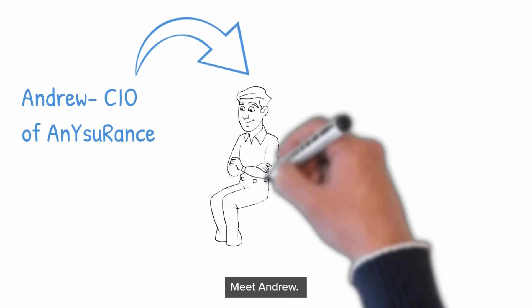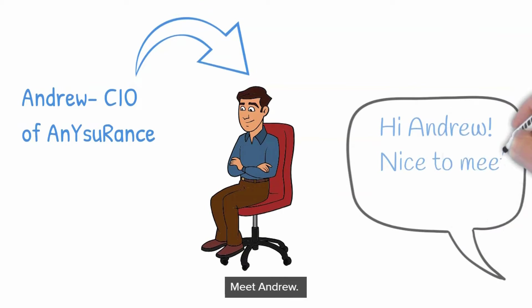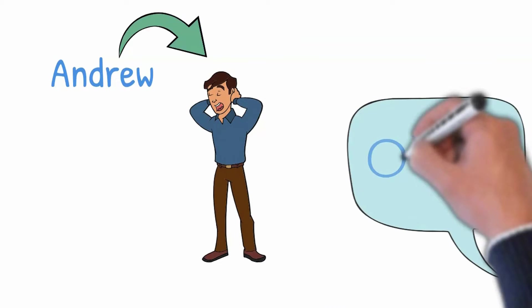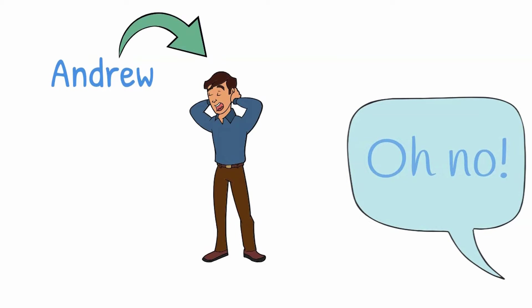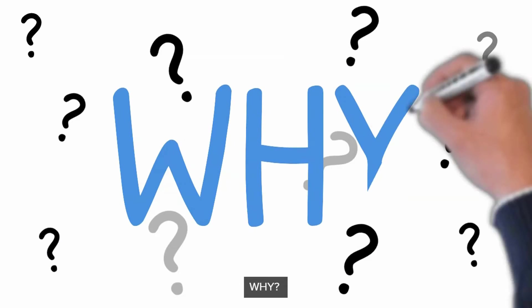Meet Andrew, the Chief Information Officer of the Any Insurance company. He has recently joined the company and has observed that there are a lot of problems that need to be resolved immediately, otherwise there will be heavy business impact. Let's have a quick look at the problems now.